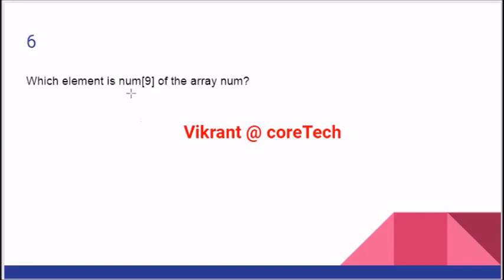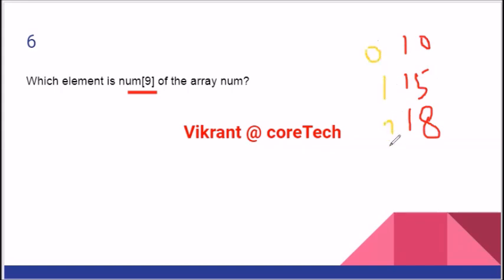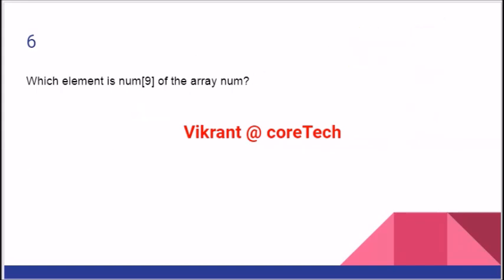Let's see the next question: which is the ninth element of the array? If the array consists of 10, 15, 18, and so on, the index number starts from 0. So array[0] is the first element, which means array[9] is the tenth element. If you guessed the tenth element, then it is correct.